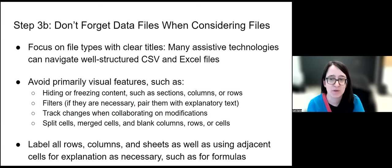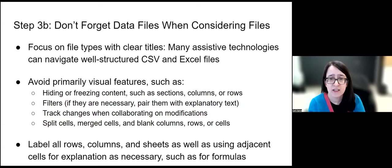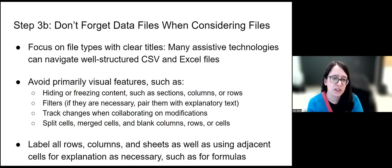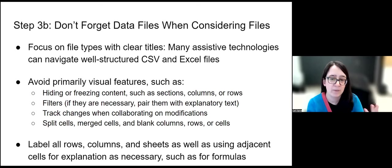Don't forget data files. A lot of times people focus on text files, but it's really important when talking about data files to make sure those are available for assistive technologies so that people have access to research data. CSV and Excel files are generally the versions most available to most assistive technologies. However, you have to avoid primarily visual features within these — such as hiding or freezing content, whether that's sections, columns, or rows; adding filters without explanatory text; track changes when collaborating on modifications; and problematic uses of split cells, merged cells, or blank columns and rows used only for visual clarity, which can separate content from its column or row title.